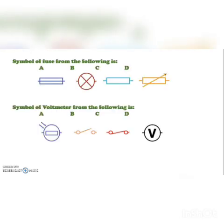The symbol of a fuse from the following options — option A is correct. The symbol of a voltmeter from the following options — option D is correct.